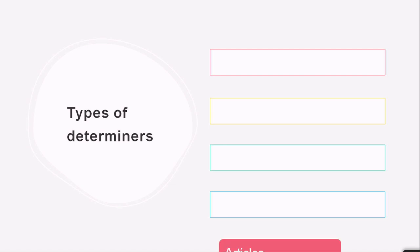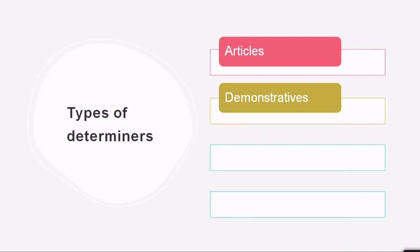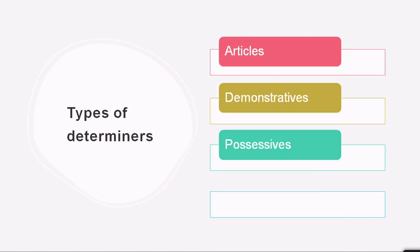Moving on, we have types of determiners. The first one is articles, the second are demonstratives, the third are possessives, and the fourth are quantifiers. We will talk about each in detail. Let us begin with articles. Articles are: a, an, and the. We use 'a' with consonants, while we use 'an' with vowel sounds — a, e, i, o, u. The five vowels take 'an,' and anything apart from those takes 'a.'